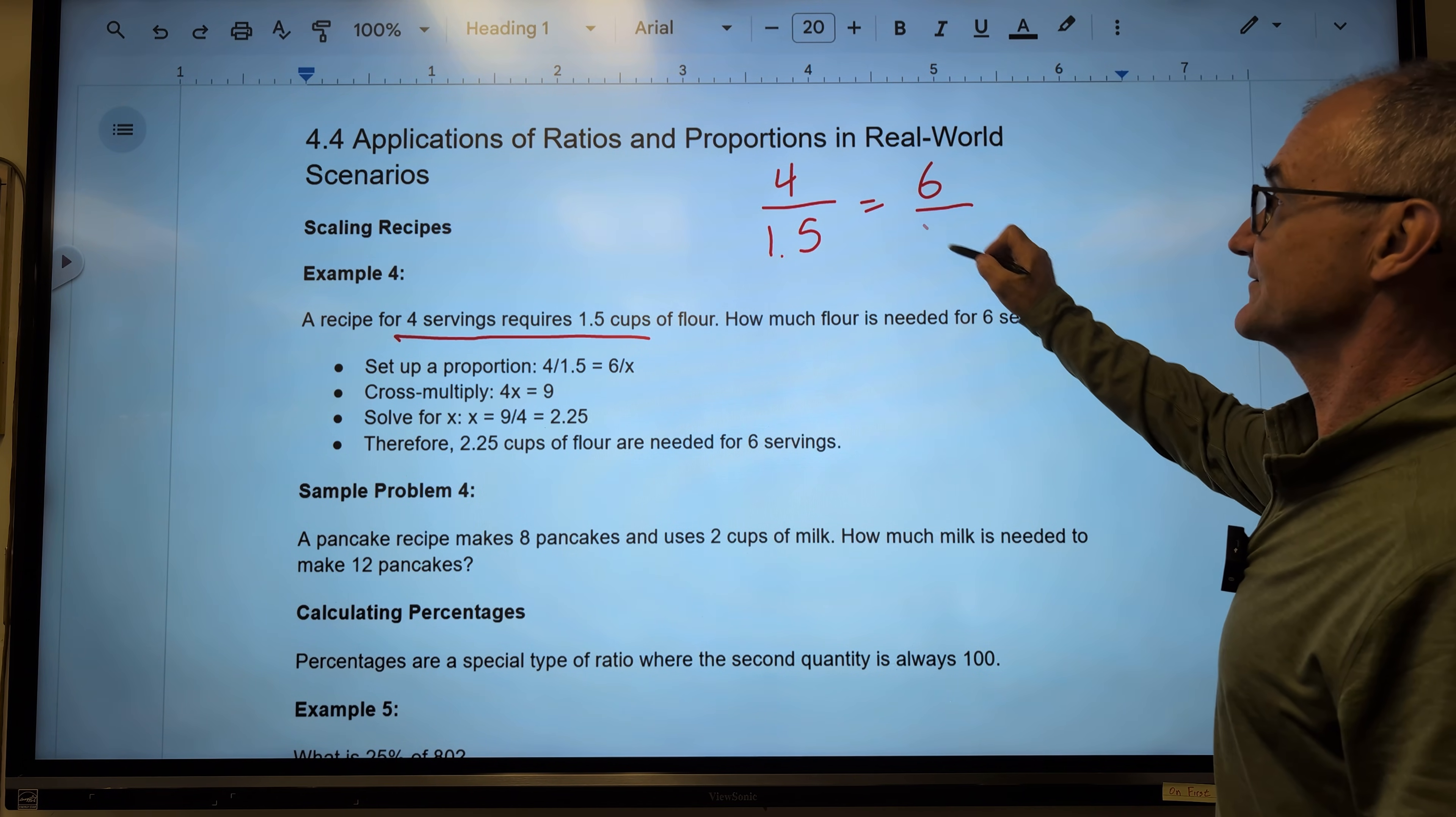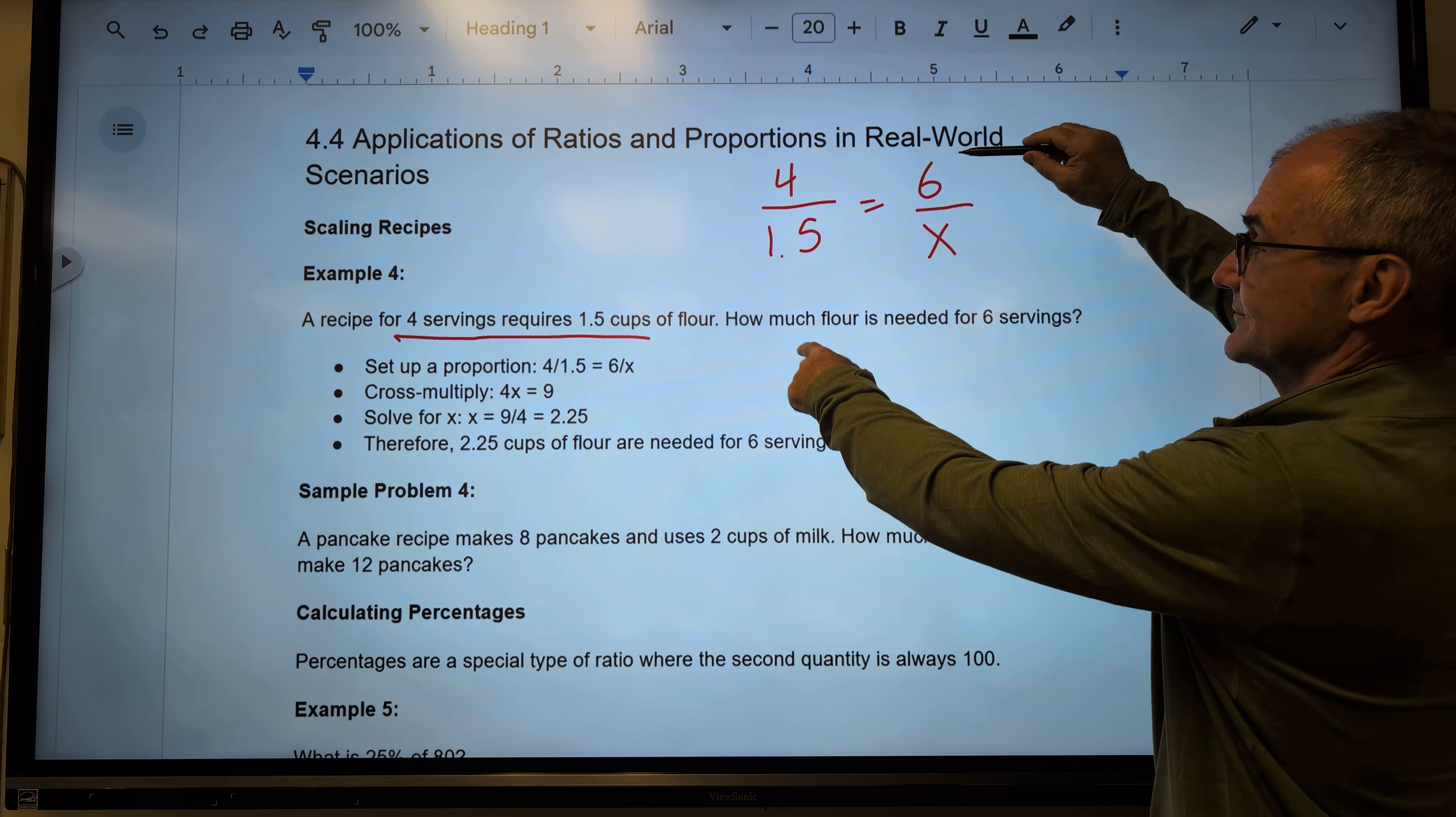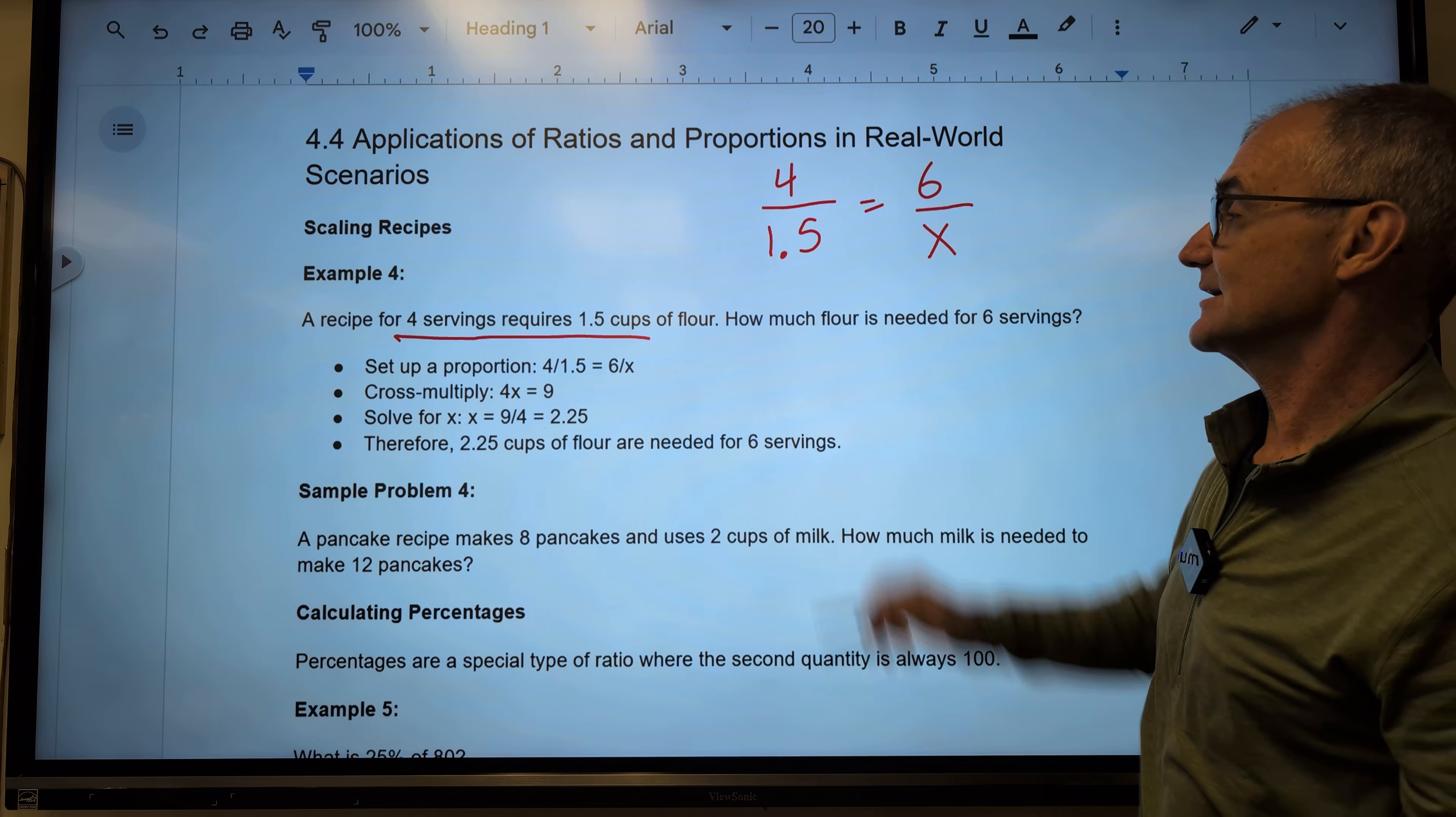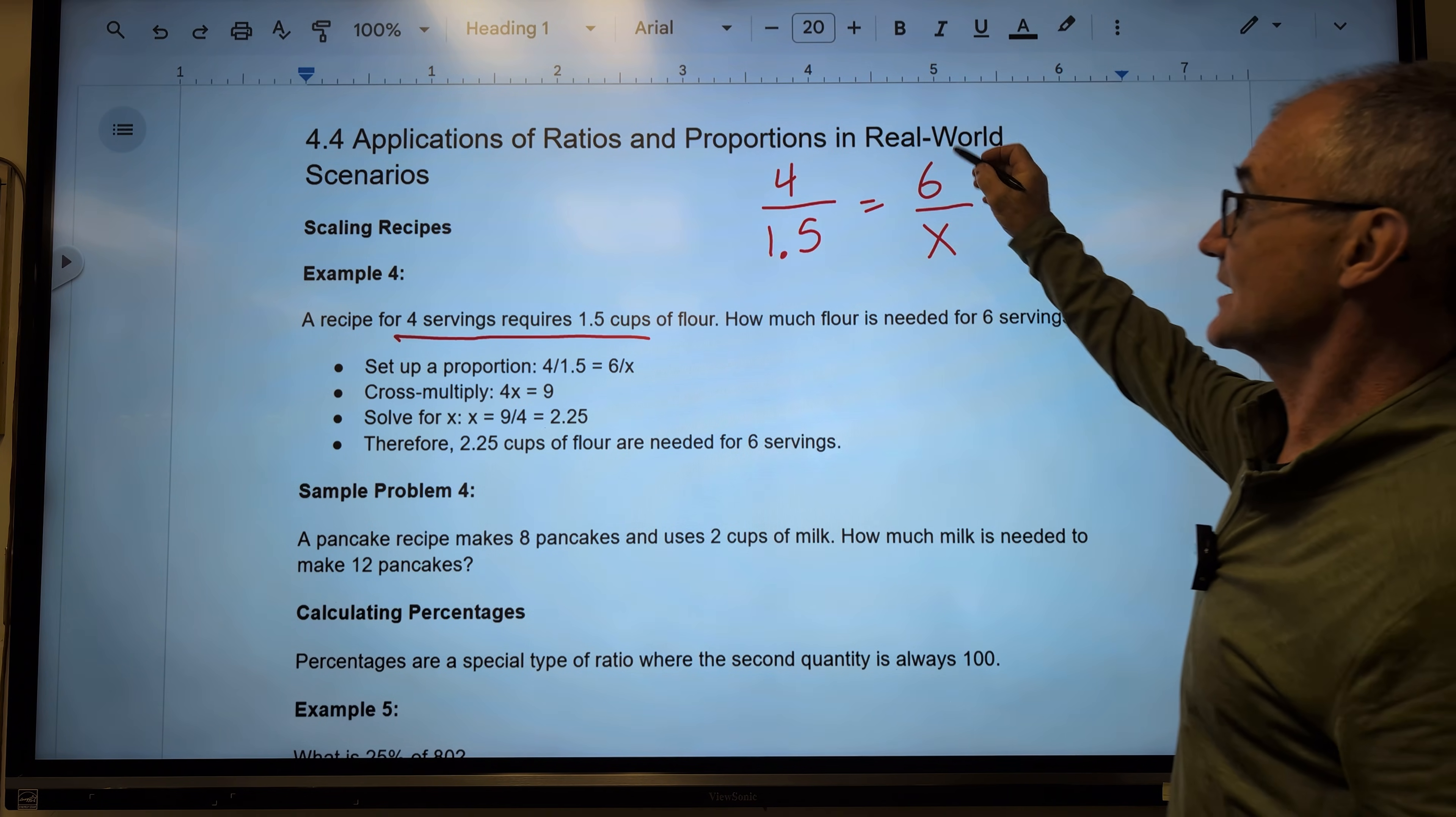So how much flour is needed for 6 servings? We double-check that. This is servings on top, flour on the bottom. 6 servings on top, flour on the bottom. It's a little weird to have a decimal and a fraction, but this is going to work out pretty well. Again, the way to set this up, ratio equal ratio, if they're equal, then I have a proportion. I cross-multiply.